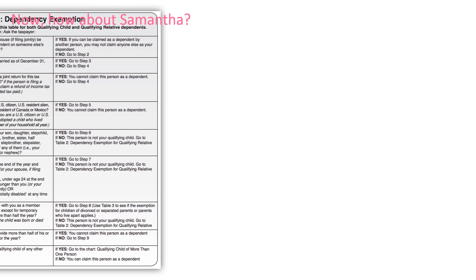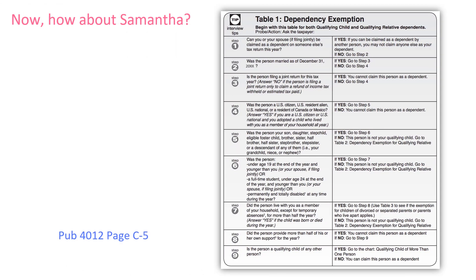Now let's look at Samantha. For her, we're going to start with Table 1. Can you or your spouse be claimed as a dependent on someone else's tax return? No, so we move to Step 2: was the person married as of December 31st? Samantha was not married, so we move to Step 4: was the person a U.S. citizen? Yes, so we move to Step 5: was the person related to you? No. So Samantha is not going to be a qualifying child.